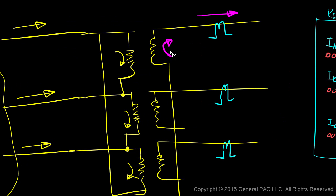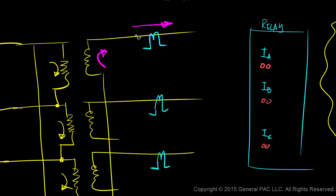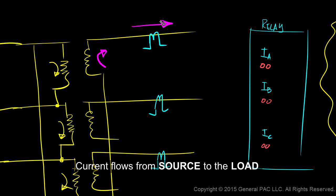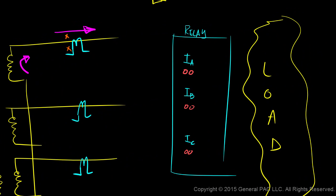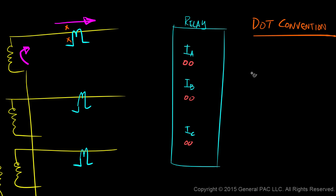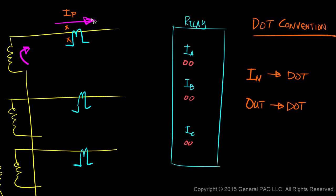Let's zoom back in to our CT connected to phase A. Suppose that the current in our steady state flows in this particular direction. In terms of polarity marks, we typically see them in two places: one on the line side, and the other on the CT side. To interpret this, we follow what's called a dot convention. The dot convention has two rules: current in to the dot, and current out of the dot. If primary current flows into the dot on the primary side, then the secondary current must flow out of the dot on the secondary side.